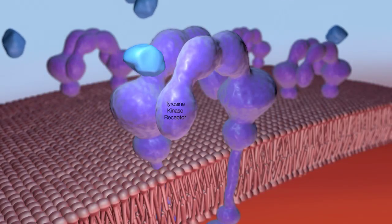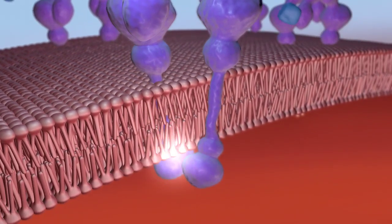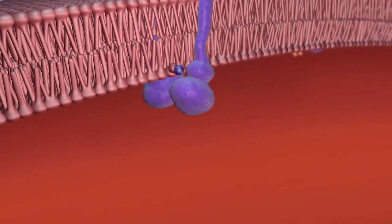Insulin binds to the tyrosine kinase receptor, causing it to autophosphorylate. Phosphorylation is a reaction catalyzed by kinases that activates proteins by donating a phosphate group.